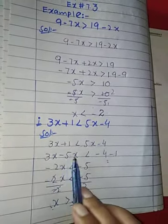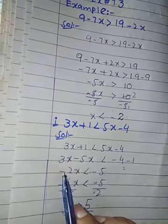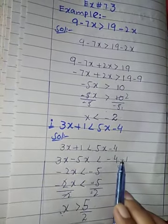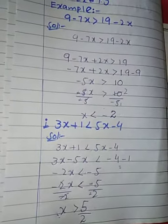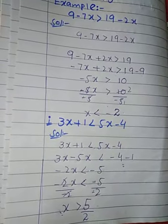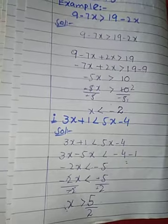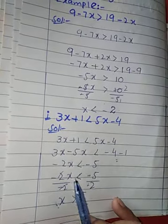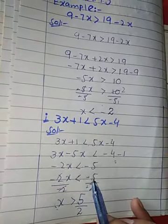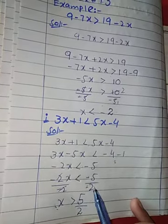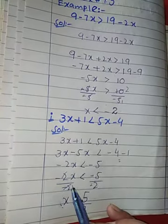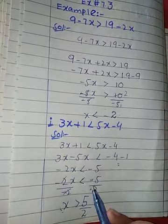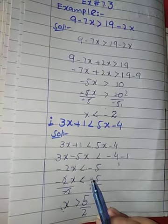Now 3x minus 5x equals minus 2x, less than minus 4 minus 1 which equals minus 5. Now to get the value of x we divide by minus 2 on both sides. Minus 2x divided by minus 2 less than minus 5 divided by minus 2. Simplify: minus 2 cancels with minus 2, and minus sign cancels with minus.